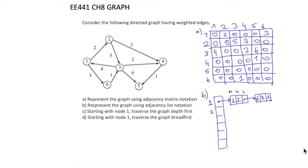Then let's consider the second node. From node 2, we have a connection to node 3 with weight 5, and a connection to node 4 with weight 3. There is no more node, so the link field is nil.